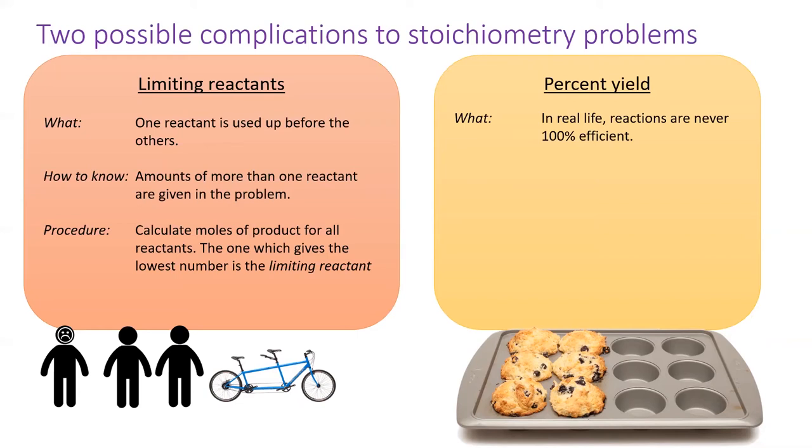By calculating the percent yield, you are calculating the efficiency with which a real reaction was performed. If a question ever gives you the amount of reactant and the amount of product, then you know you are living in a percent yield problem.